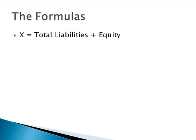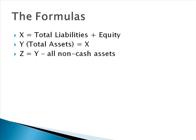The formula is very simple. X is equal to total liabilities plus equity. Y is equal to total assets — since it is a balance sheet, that value must also be equal to X. And Z is equal to Y minus all non-cash assets. The easiest thing to do is walk through three examples and see if it makes sense.